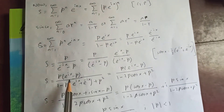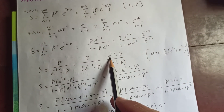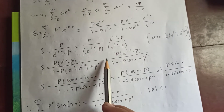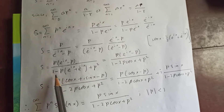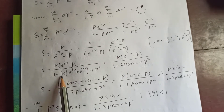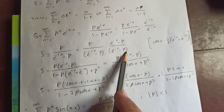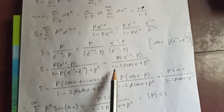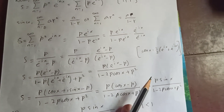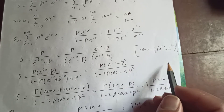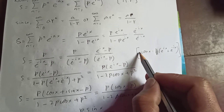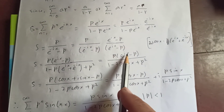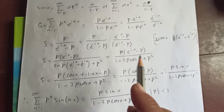Multiplying further by (e^(ix) − p) in numerator and denominator: the numerator gives p·e^(ix) − p². In the denominator, e^(−ix)·e^(ix) = 1, and the cross terms give −p·e^(ix) − p·e^(−ix), and p·p = p². So the denominator is 1 − p(e^(ix) + e^(−ix)) + p². Since cos(x) = (e^(ix) + e^(−ix))/2, this denominator becomes 1 − 2p·cos(x) + p². So H = (p·e^(ix) − p) / (1 − 2p·cos(x) + p²).